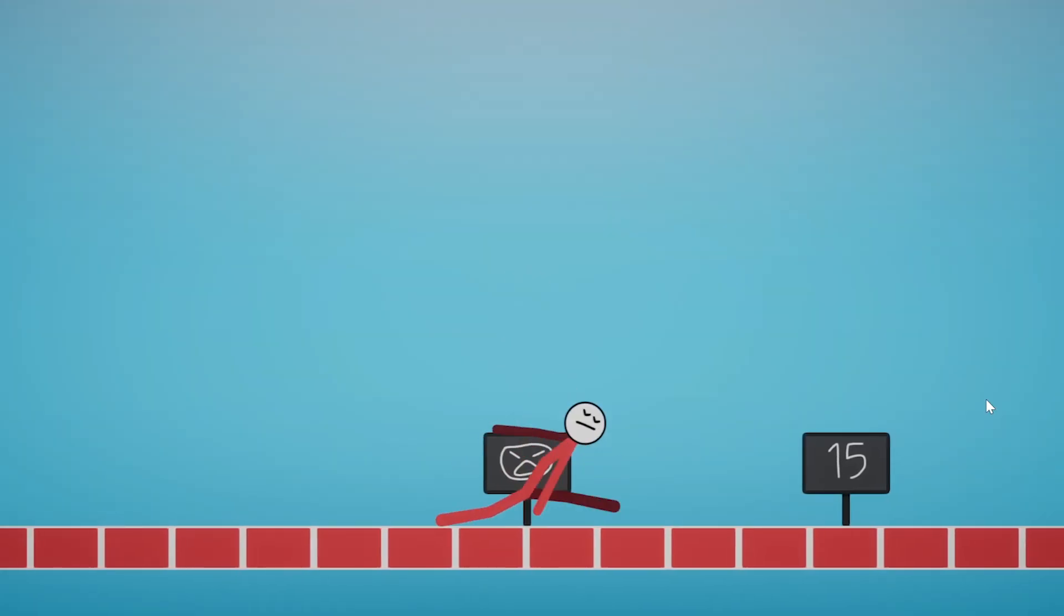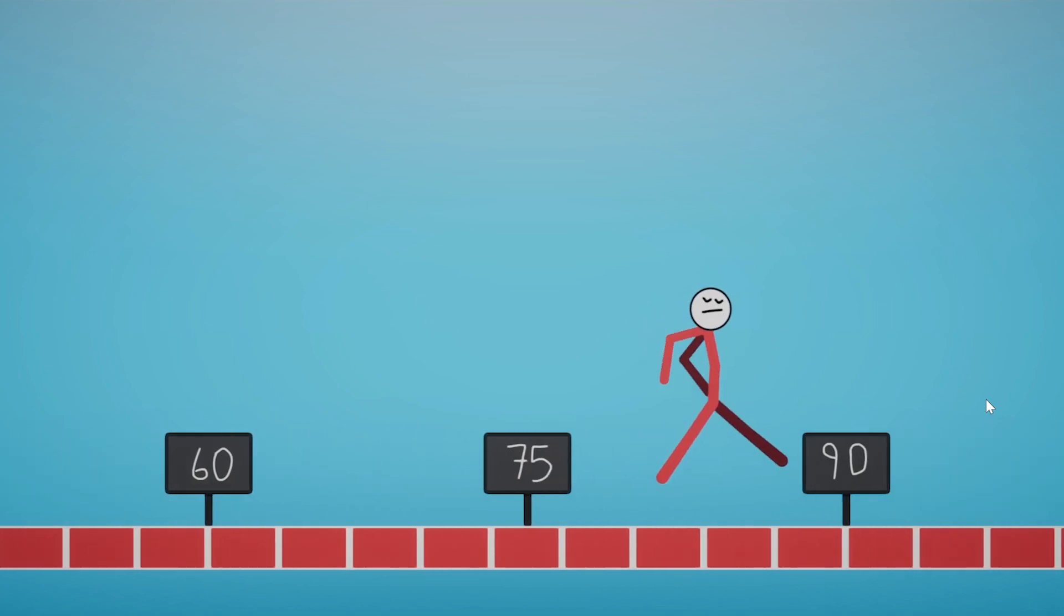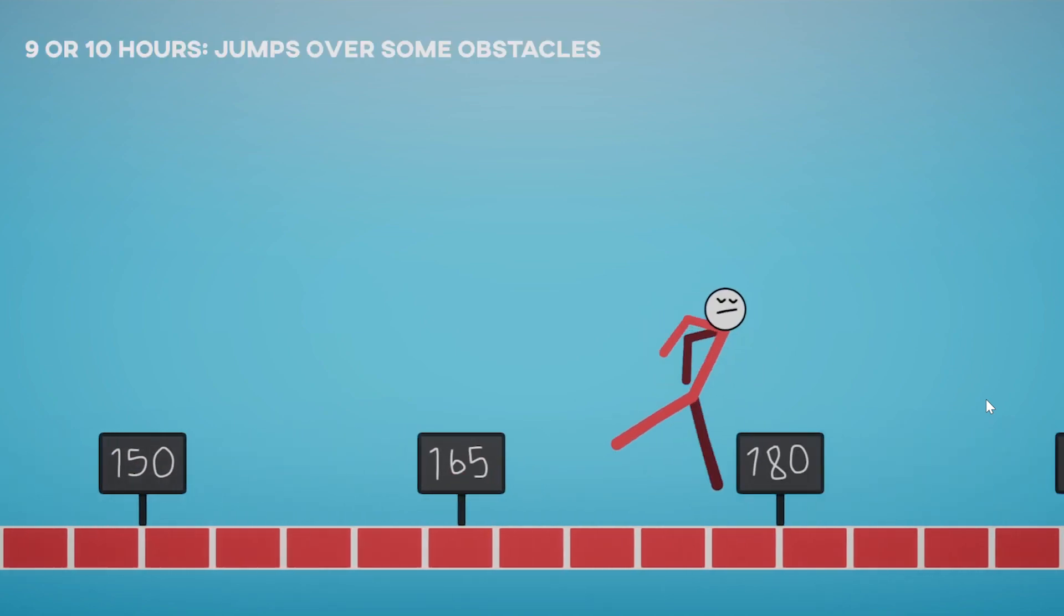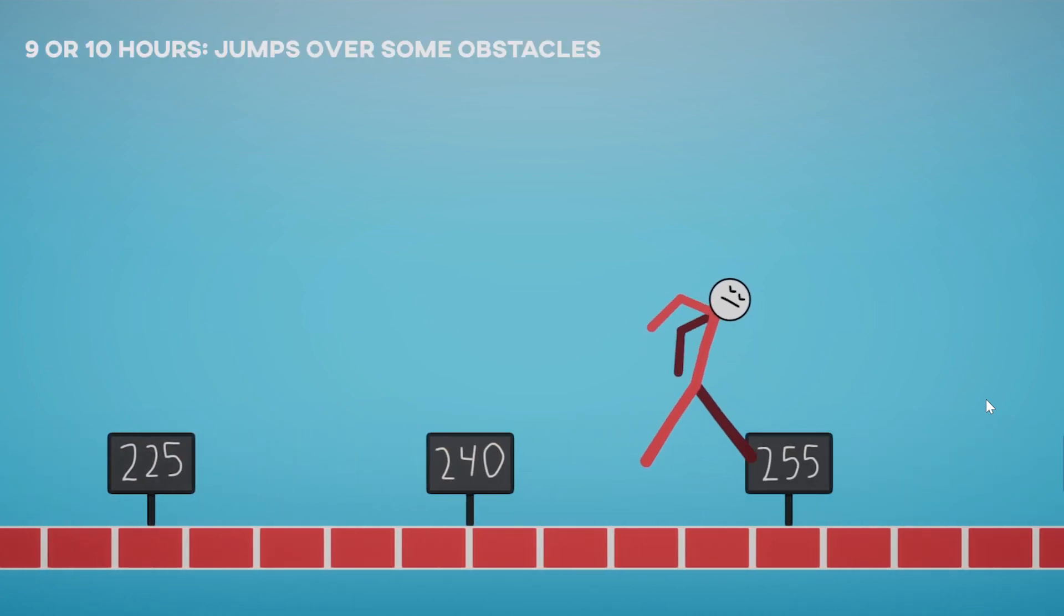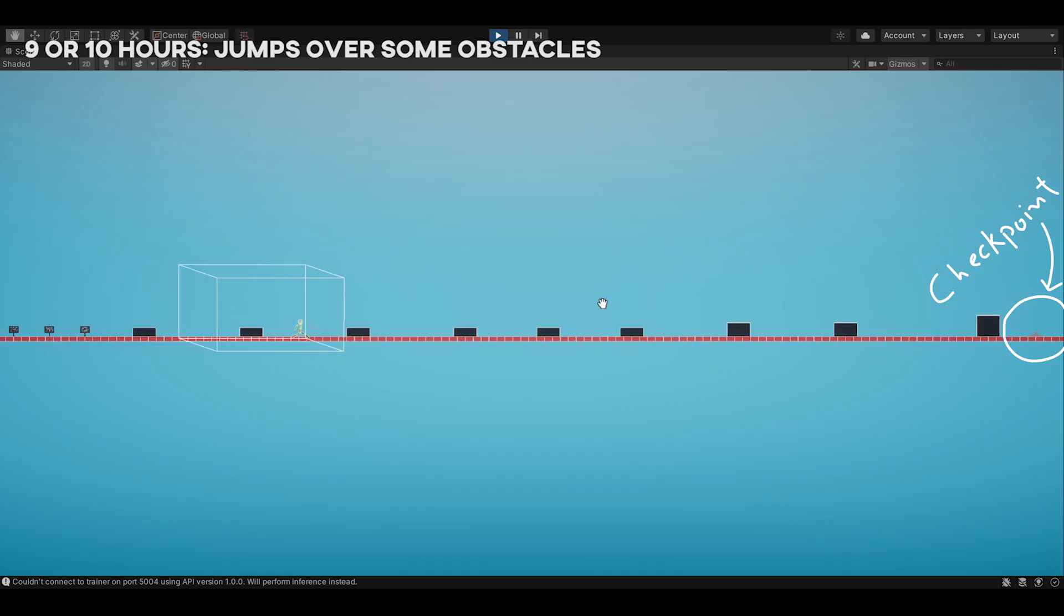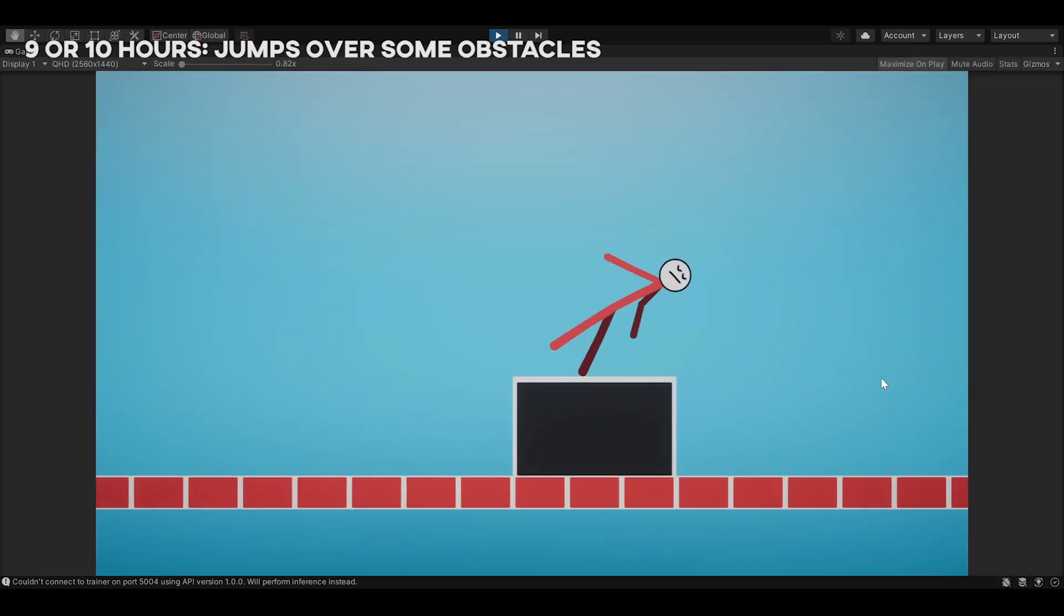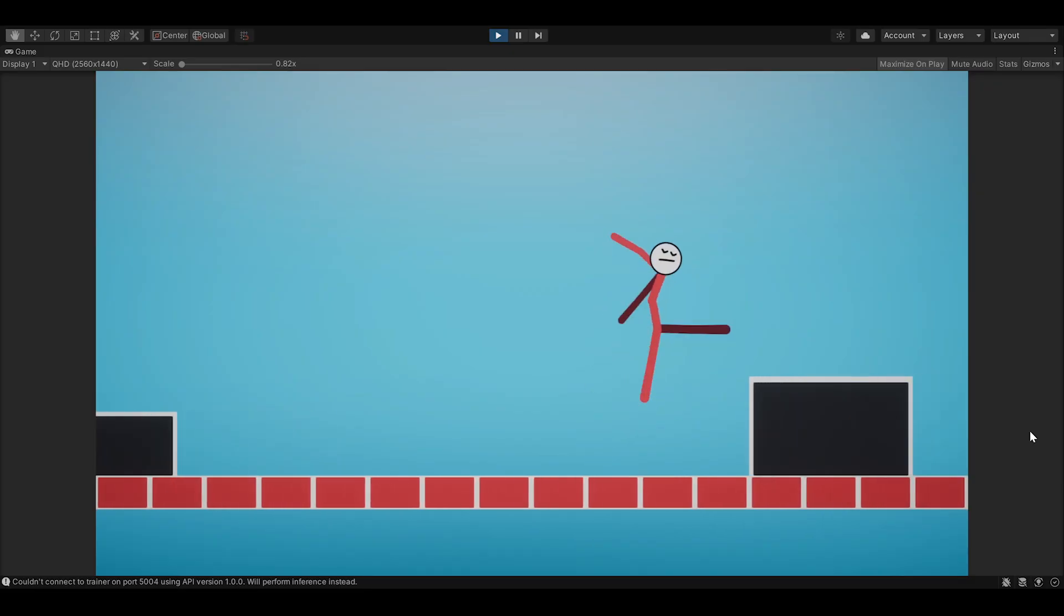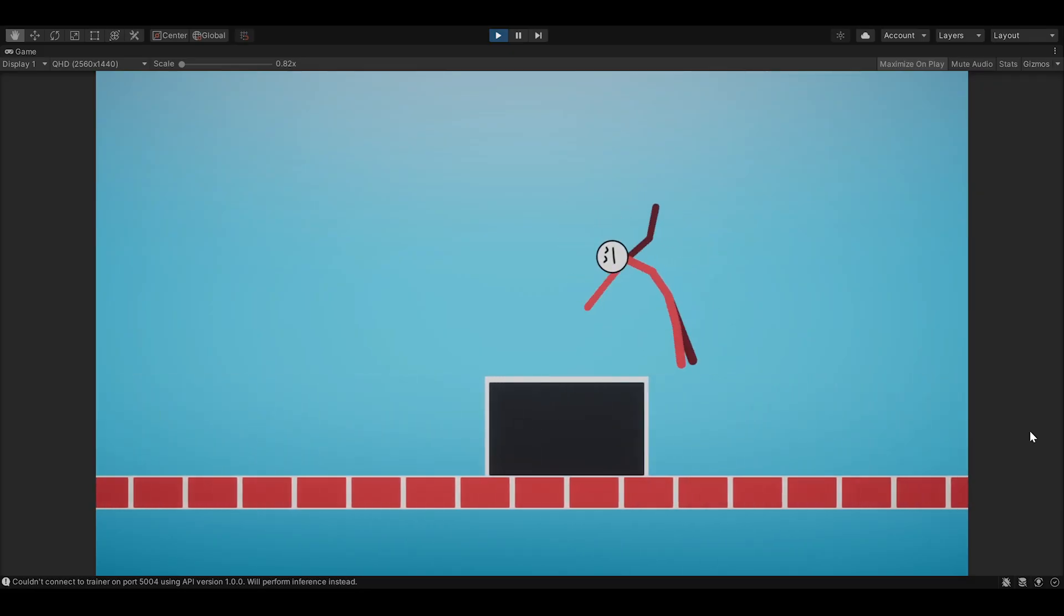I'm not really sure if it passed 9 hours or 10 hours, but it's not important, I'm just going to show you how it looks. Now the agent understands that the best way to keep moving is to jump over the obstacles. Unfortunately, it's not able to achieve the checkpoint at the end of the course. And even after 2 more hours of training, it is still not able to do it.